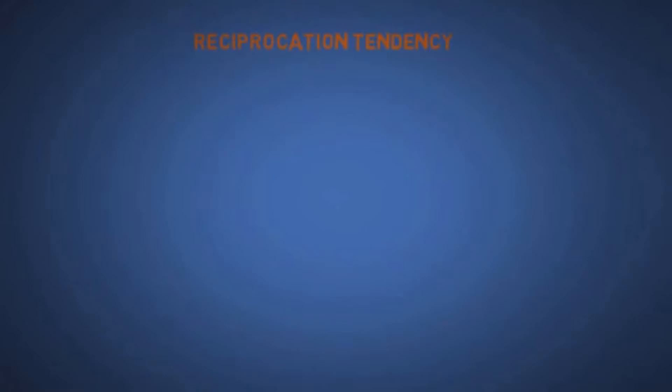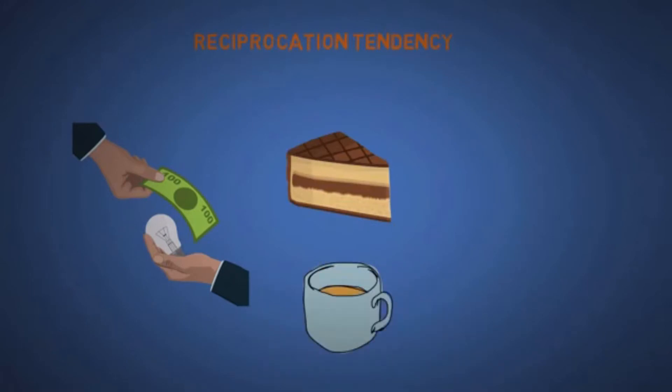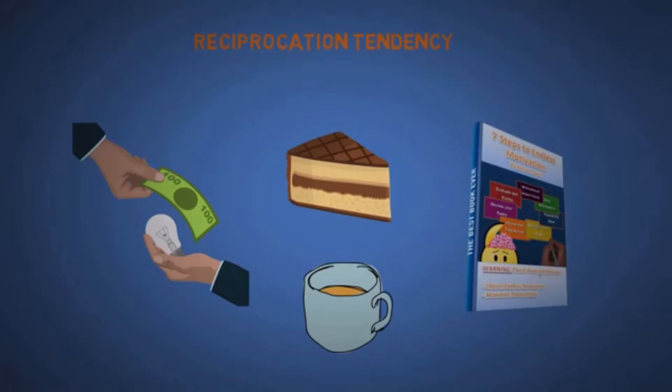The ninth is reciprocation tendency, which is related to the seventh. We tend to want to return the favor when someone gives us something or helps us out. This is why some supermarkets offer free samples or why car salesmen might offer free coffee. But it is not why my ebook is free. I'm just nice.